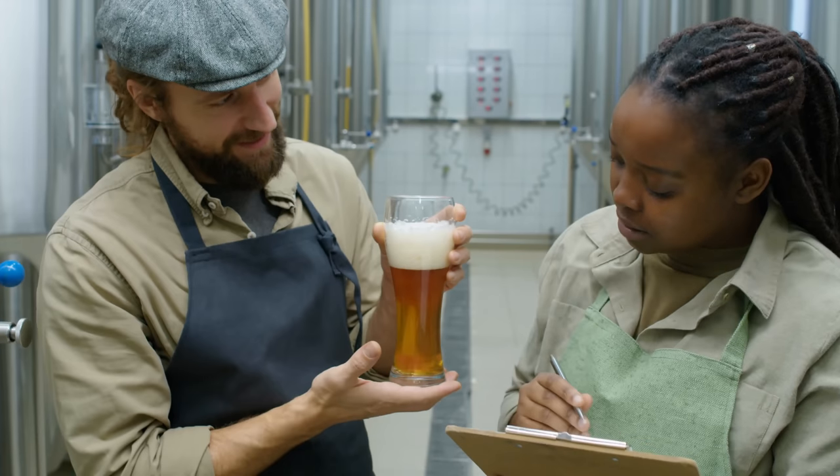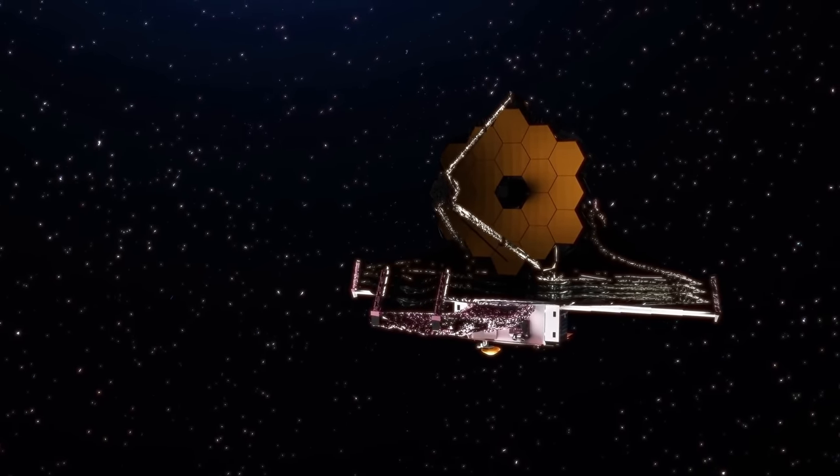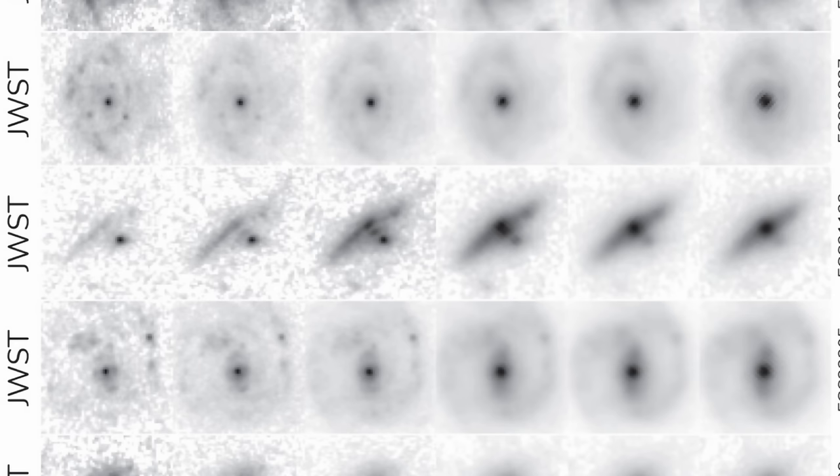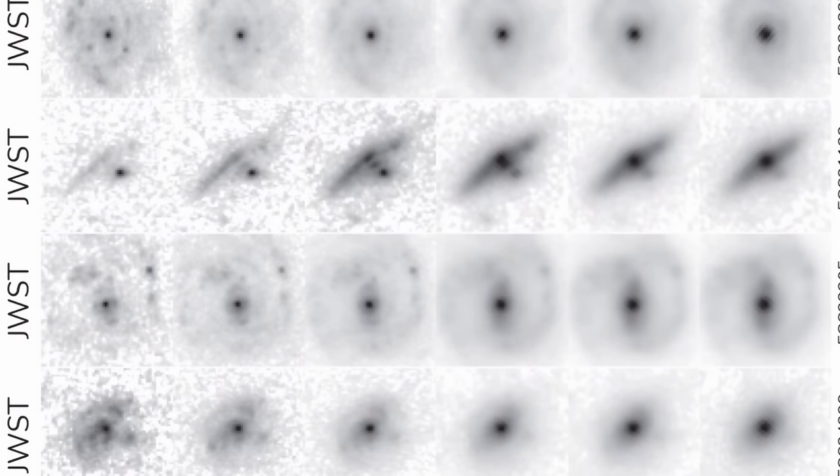And then James Webb goes, hold my beer. I mean, really, hold it, because I have no hands. And basically goes and looks at the same galaxies one more time, discovering things that were previously completely invisible.